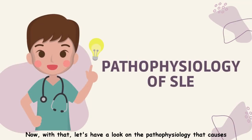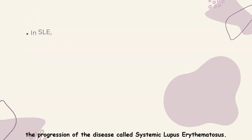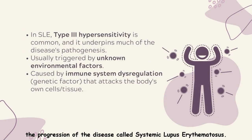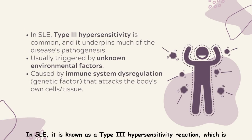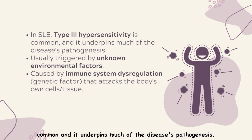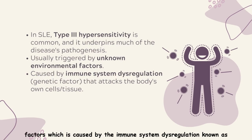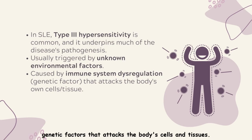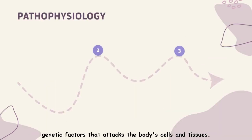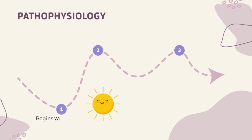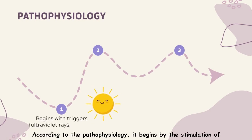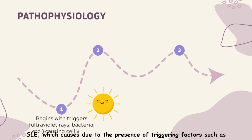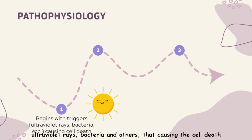Now, let's have a look at the pathophysiology that causes the progression of systemic lupus erythematosus. SLE is known as a type 3 hypersensitivity reaction, which is common and underpins much of the disease pathogenesis. SLE is usually triggered by unknown environmental factors, causing immune system dysregulation driven by genetic factors that attack the body's cells and tissues. The pathophysiology begins with stimulation by triggering factors such as ultraviolet rays, bacteria, and others, causing cell death.